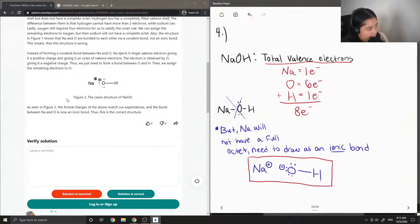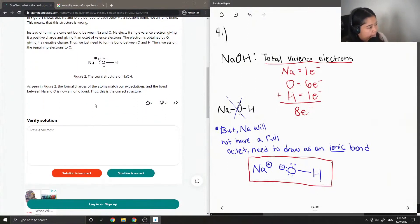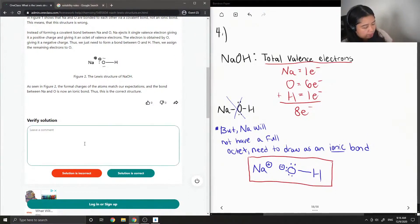So they wrote out the same Lewis structure that I did as well. As seen in figure two, the formal charges of the atoms match our expectations, and the bond between sodium and oxygen is now an ionic bond. Thus, this is the correct structure. So this solution is correct.